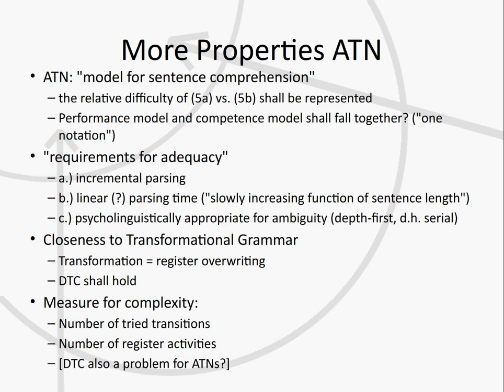The complexity of processing should represent the complexity of the sentence. The augmented transition network works incrementally — it processes a sentence from beginning to end, one word at a time. The processing is also roughly linear, because parsing time does not increase with the length of the sentence but with its complexity. So a longer sentence does not necessarily mean the automaton takes much longer.